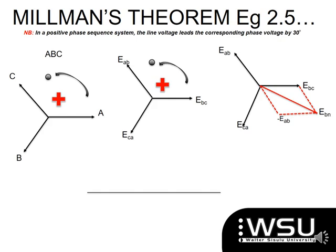The resulting phase voltage drawn is EBN — it lies between EBC and the negative of EAB, with B being the common letter. The next step is to draw the other two phase voltages at 120 degrees from EBN. To name them correctly, rotating anti-clockwise through the axis must follow the A-B-C sequence — so the one at roughly 90 degrees above is EAN and the one below is ECN, and they are marked accordingly.